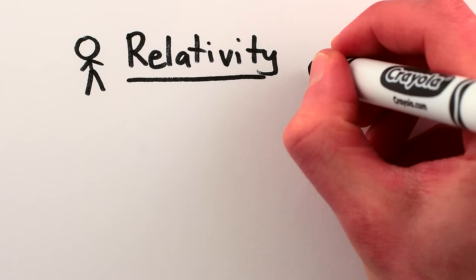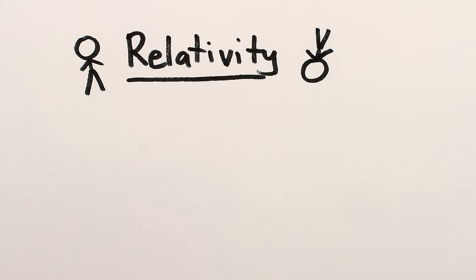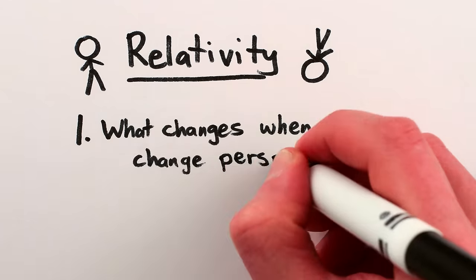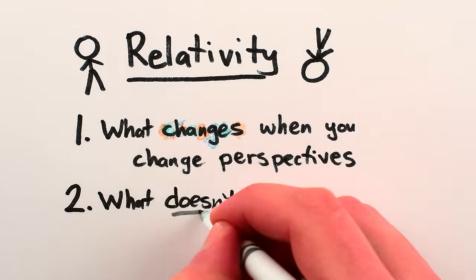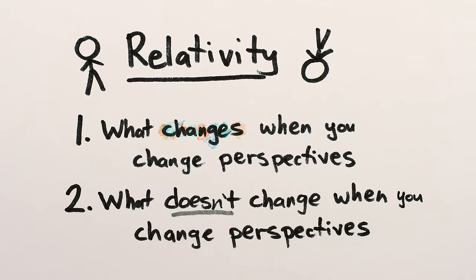It's the goal of relativity to answer these kinds of questions. In fact, relativity can essentially be summed up as two basic ideas. One, to figure out how objects and their motion look from different perspectives. And two, to notice which properties of objects and their motion don't look different from different perspectives.